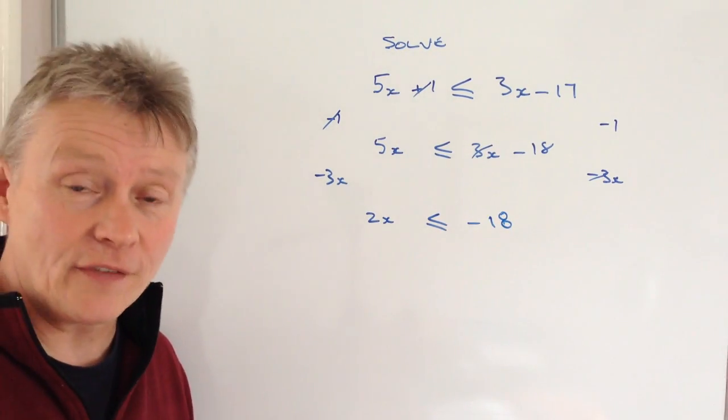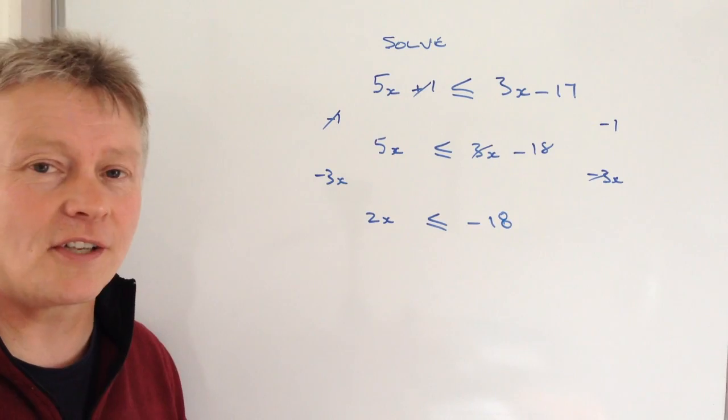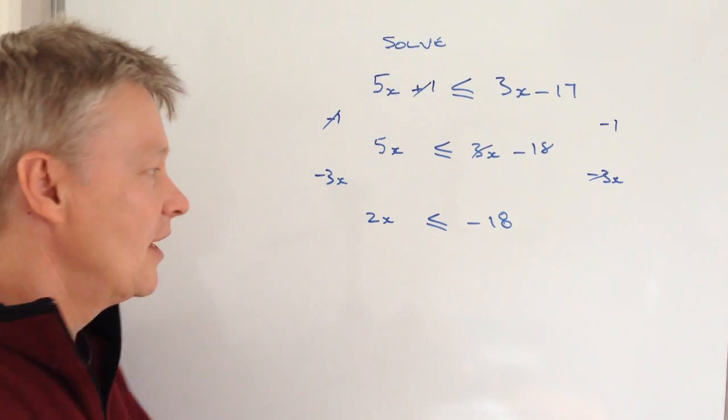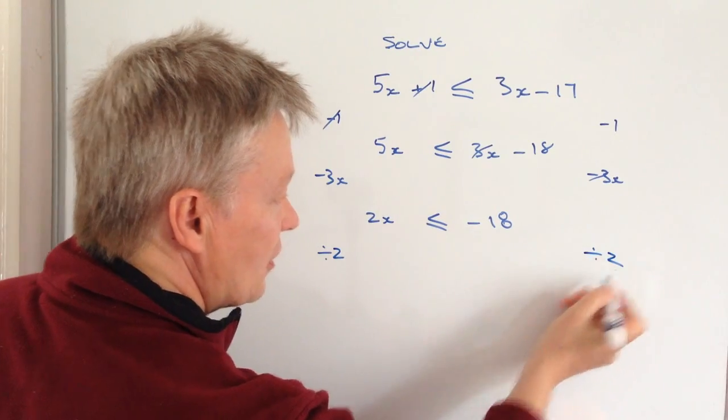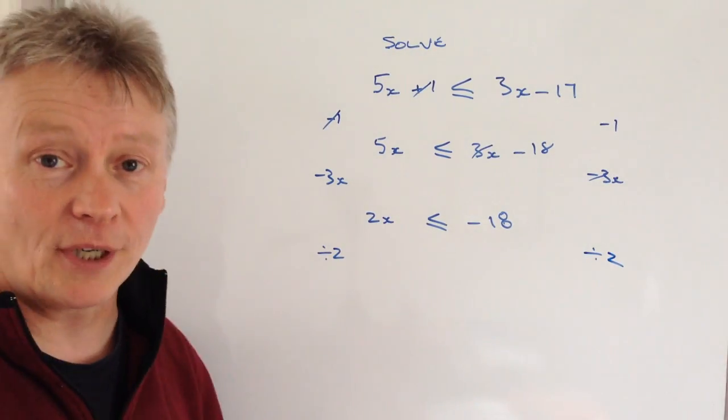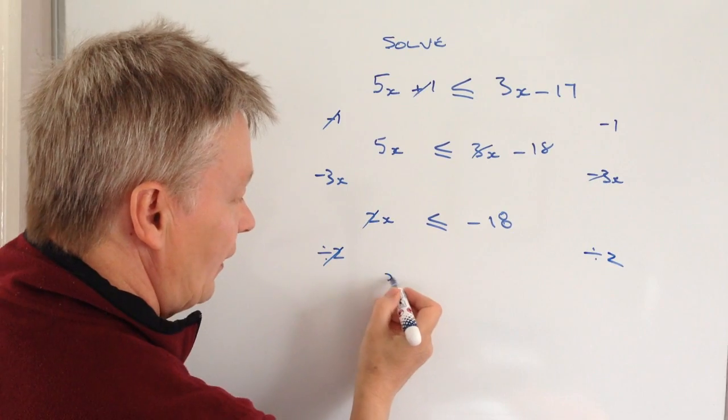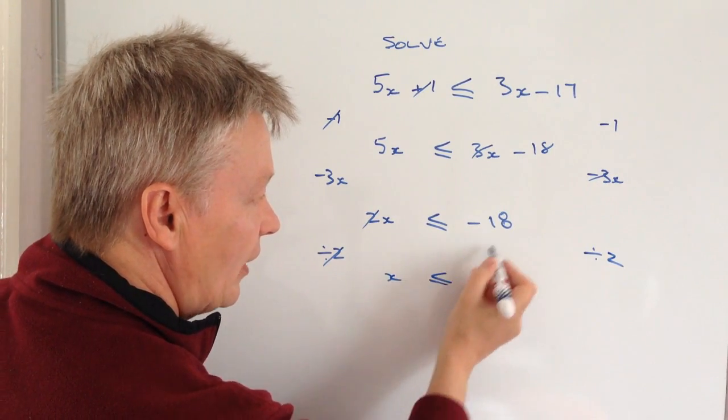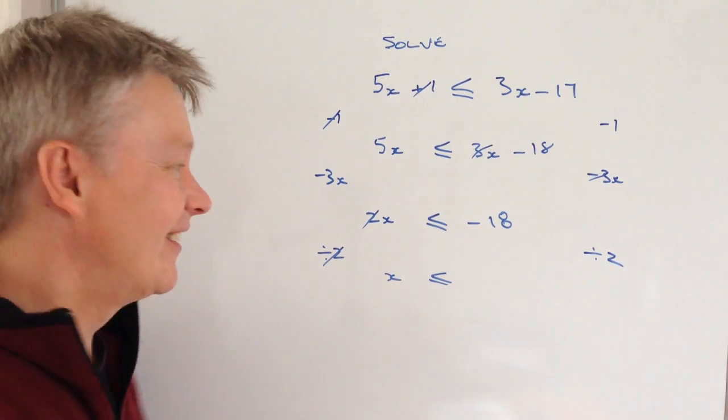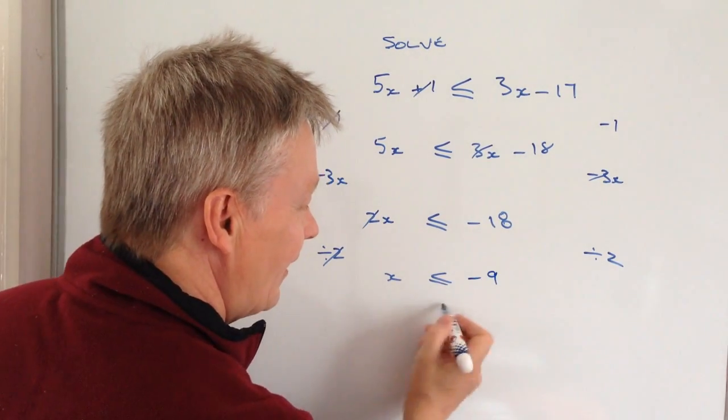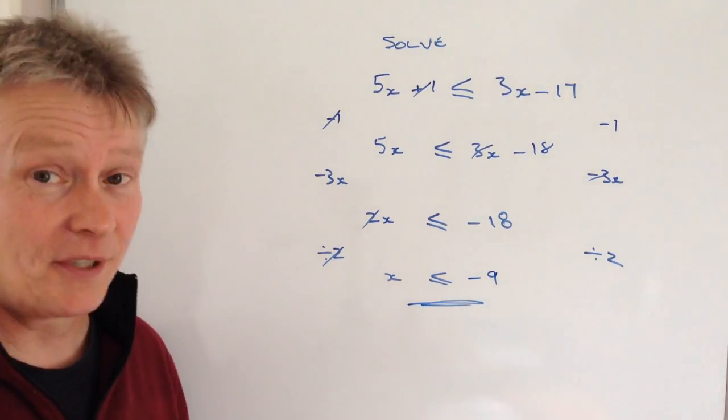I've got two values of x or equal to minus 18. So to get one value of x I'm going to just divide through by 2, got to do it both sides. If I divide this side by 2 that becomes one value of x and that's less than or equal to minus 18 divided by 2 is minus 9, and that will answer this particular question.